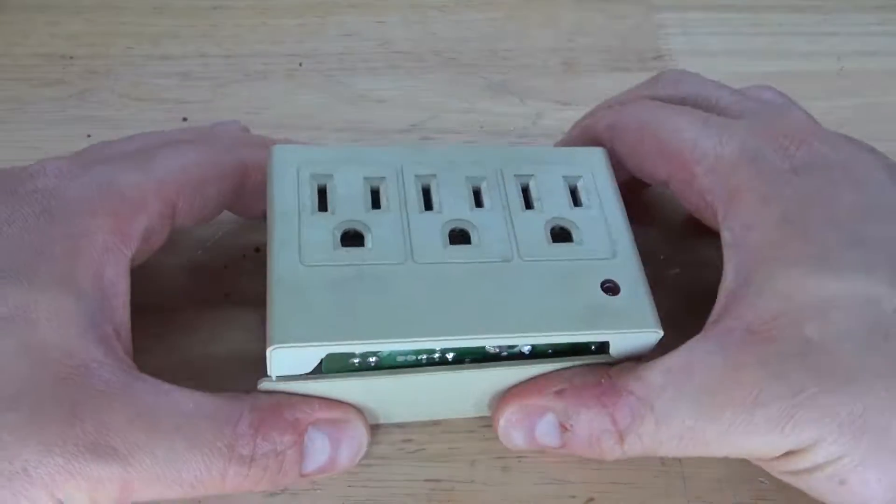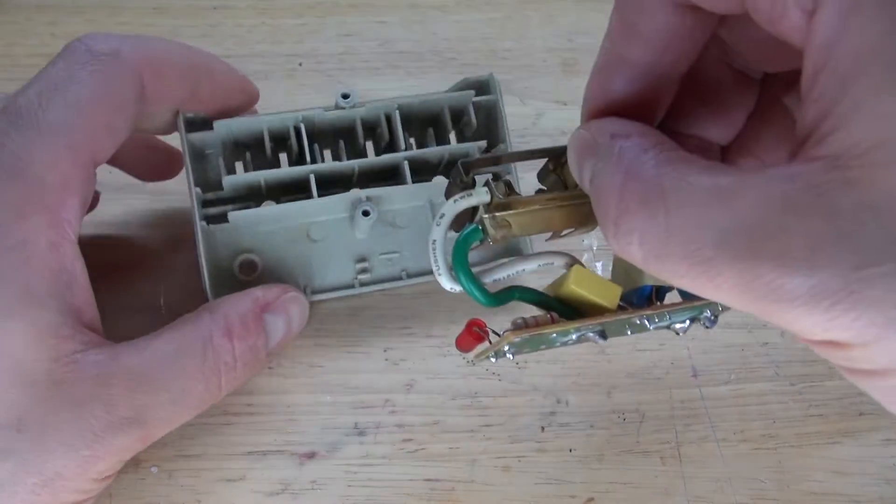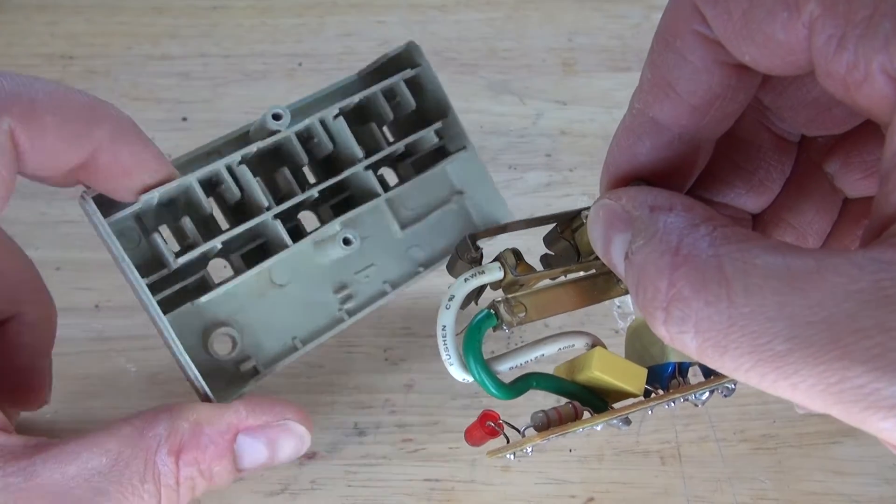Now open it up, and as you can see, it's a very simple circuit. Pull it out, remove the housing, and as you can see, this circuit has three main wires that connect to the wall outlet.